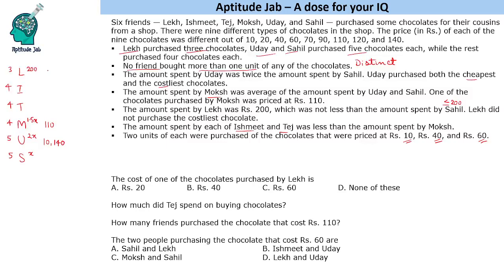Now, how to crack this: for 200 we will get too many combinations, so we should focus on Sahil who can spend maximum 200 and has purchased 5 chocolates. There are very few possibilities since he is spending a small amount while purchasing more chocolates. Looking at the smallest five values — 10, 20, 40, 60, 70 — this turns out to be 200. So he cannot spend more than 200, and the chocolates he purchased are of 10, 20, 40, 60 and 70 rupees.